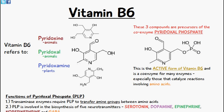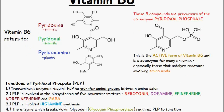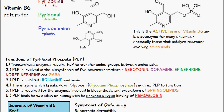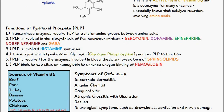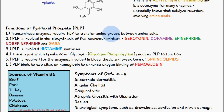Let's talk about the functions of pyridoxal phosphate. A variety of enzymes known as transaminases require PLP to transfer amine groups between amino acids, so without this you wouldn't be able to convert certain amino acids into different amino acids.